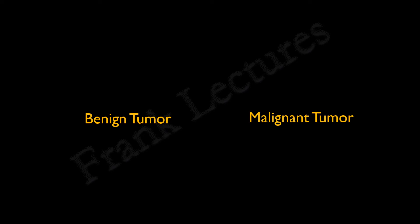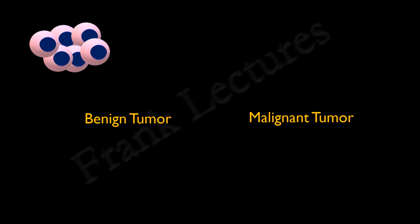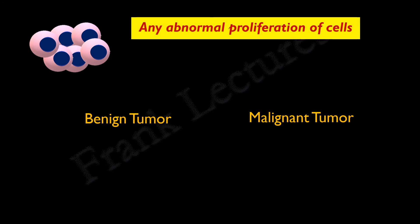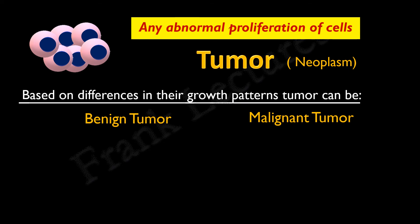Let's now understand what we mean by benign and malignant tumor. Suppose this is an abnormal cell that has lost genetic control over cell growth, so it grows and divides out of control. Any abnormal proliferation of cells is called a tumor. Another term often used for tumor is neoplasm, which literally means a new growth. Based on the differences in their growth patterns, tumors are of two types: benign and malignant.